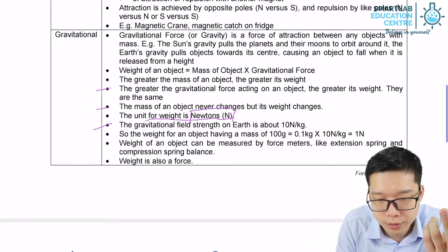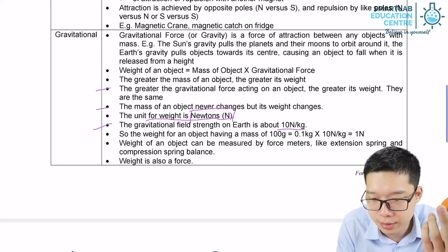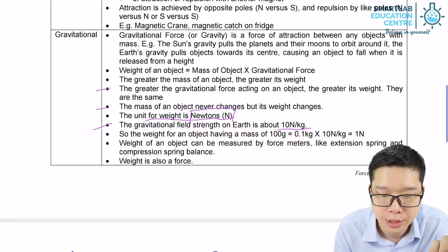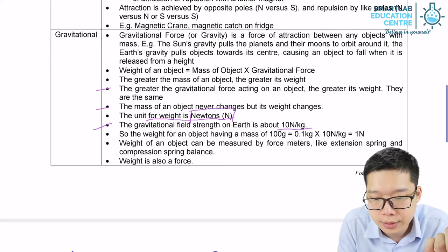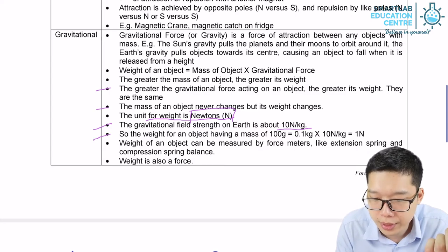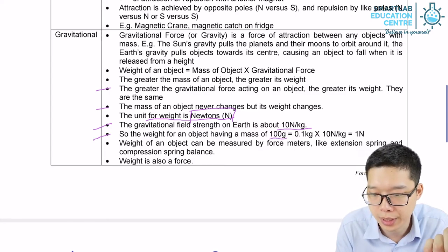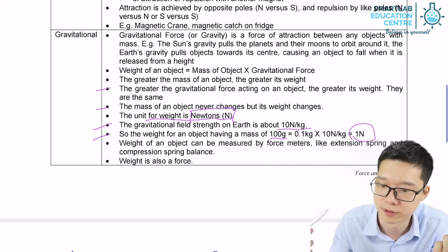And the gravitational field strength on earth is 10 newton per kg. This one you must remember is 10 newton per kg. It's always 10. And so that's why for a 100 gram object, it will have 1 newton, as we mentioned a few times ago.